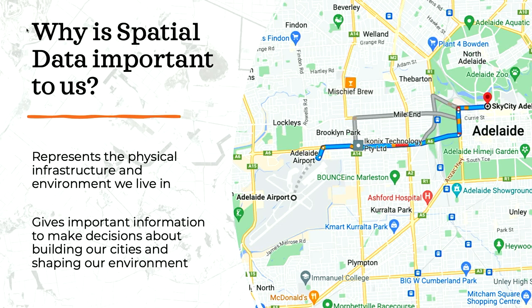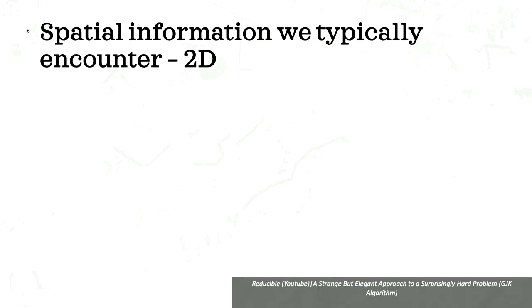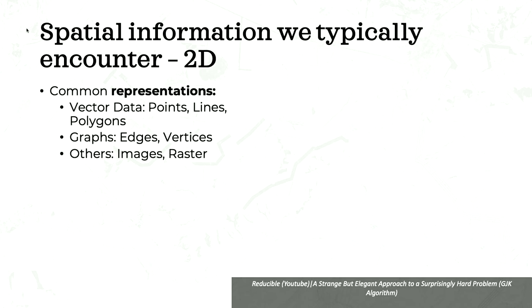Before we can delve into solving these important problems, we first need to understand how we actually represent geospatial data for computers to understand. There are many ways to represent geospatial data depending on whether you want to include verticality or not. For this presentation, we'll mostly focus on the 2D case — a map where things live in two dimensions. In two dimensions, everything lives on a coordinate system, so things can be represented as vector data — the intuitive things you find in everyday life, like shapes, lines, and points.